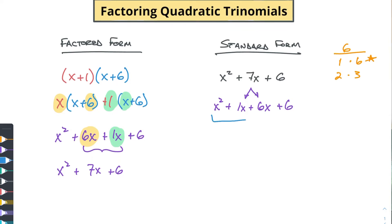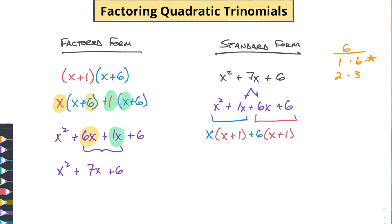Now I'm going to look to see what is common between the first two terms and what is common between the last two terms. Both x squared and one x have x's in them, so I factor out that x and I'm left with x plus one on the inside — because x times x is x squared and x times one is one x. What's common between the last two values? I've got a six common, so I pull out a six and I'm left with x plus one as well. So six times x is six x and six times one is six. Now I've got x plus six times x plus one.